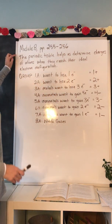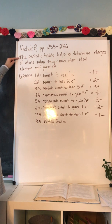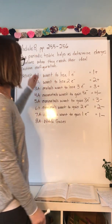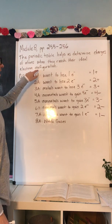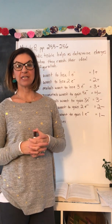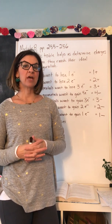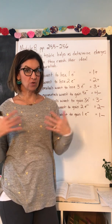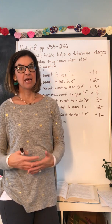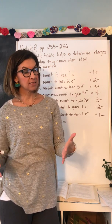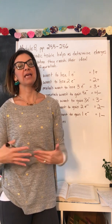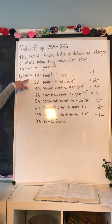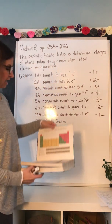First off, the periodic table helps us determine charges of atoms. When we're talking about charges of atoms, we mean a positive charge or a negative charge when they reach their ideal electron configuration. The ideal electron configuration is when the atom's outer orbital is completely full of electrons. In order to attain this ideal electron configuration, the atom wants to either lose some of its extra electrons or gain more electrons so that it has eight in its outer orbital.